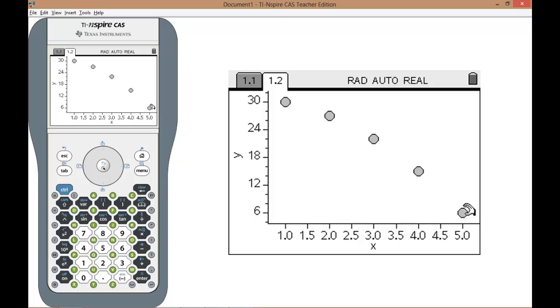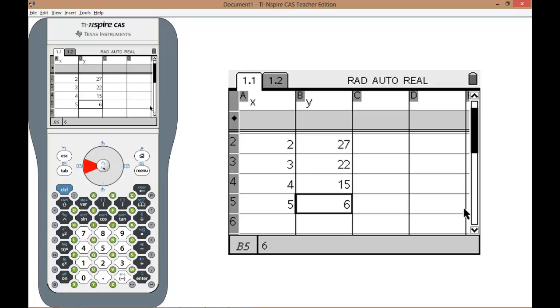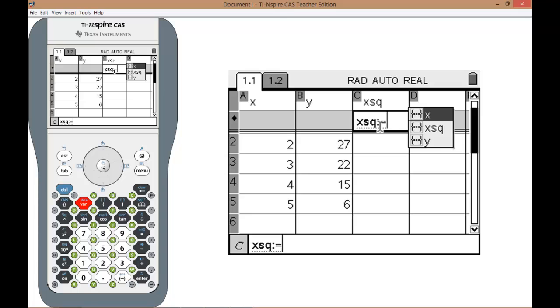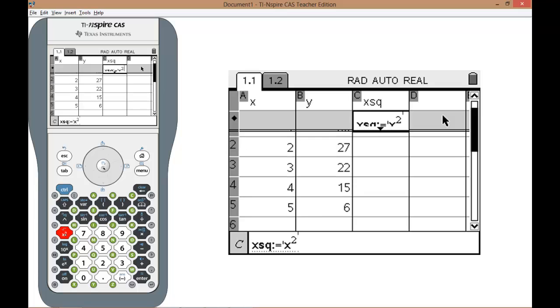Now to apply the x squared transformation you need to press CTRL and back to go back to your original table. Come up here and we're going to call this column XSQ as its label. If you come down to the grey box you need to click or type in equals. You need to select var and select the x variable. That's the variable we're going to be squaring and you then square it.